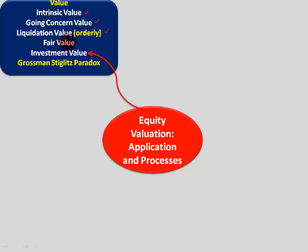Then we looked at fair value and investment value. Fair value — a knowledgeable buyer, knowledgeable seller; market value is fair value. But then we distinguished that from investment value: the value to a particular buyer — for example, an asset might be worth 10, but to a particular buyer it might be substantially more valuable. So that was investment value.